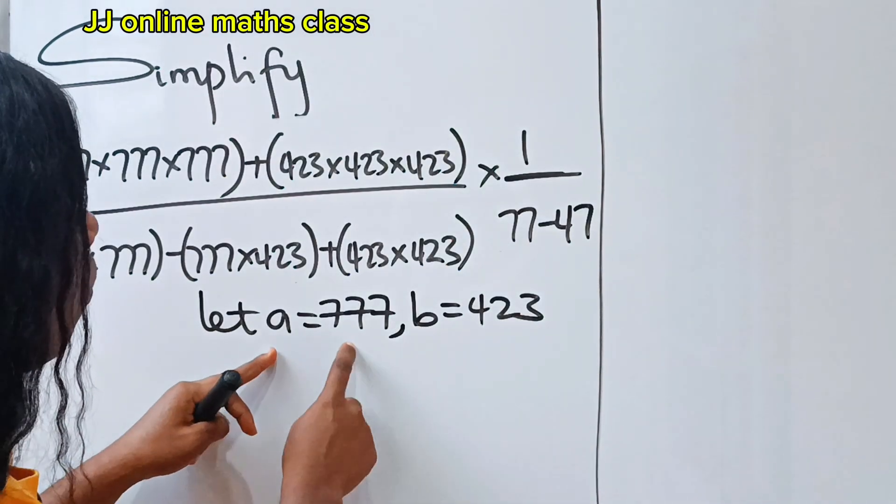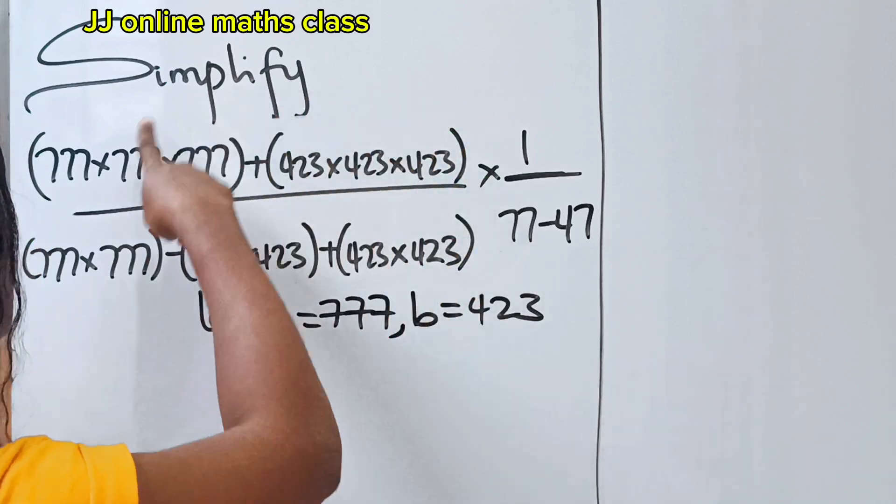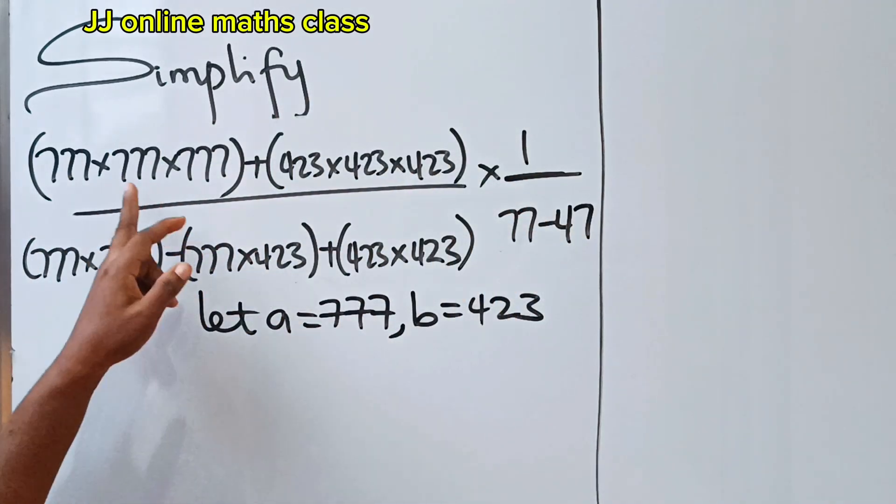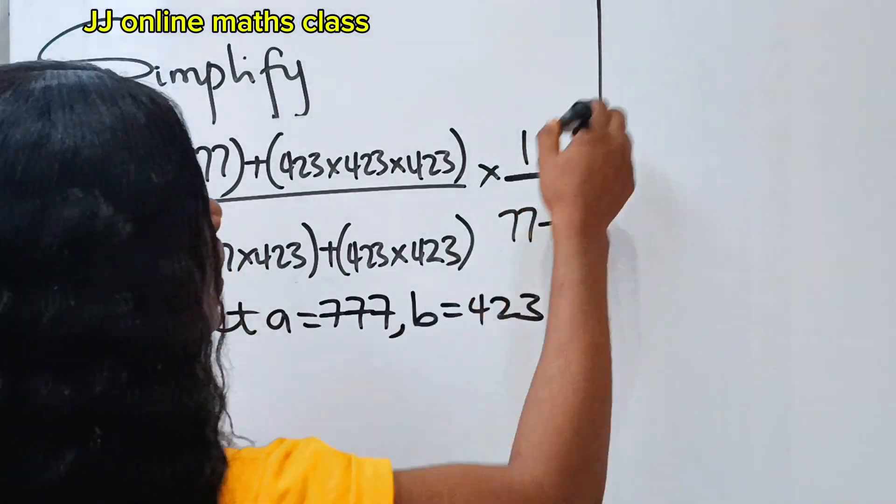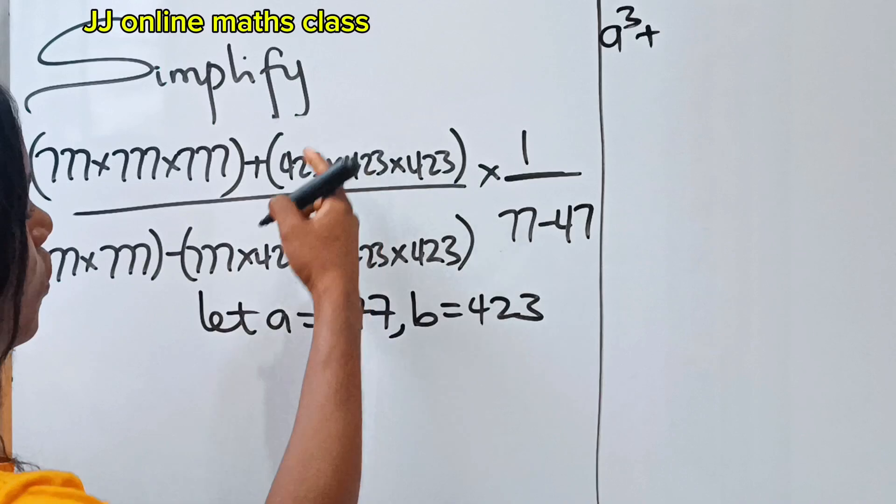If we say let a equals this and b equals that, then we can actually rewrite this whole equation as a to the power of three. So we have a³ plus, then this will be what...